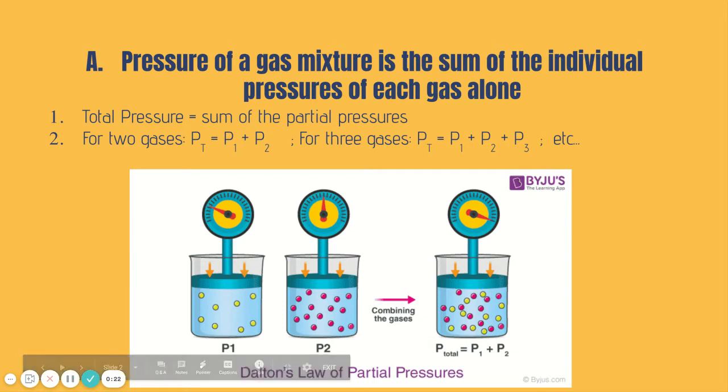So this is Dalton's law. If you take the pressure of each individual gas you can find the total pressure. For two gases you would add up the partial pressure of the first gas, the partial pressure of the second gas to get the total pressure. If you had three gases you would have three partial pressures to add together. If you had four gases you'd have four partial pressures and so forth.